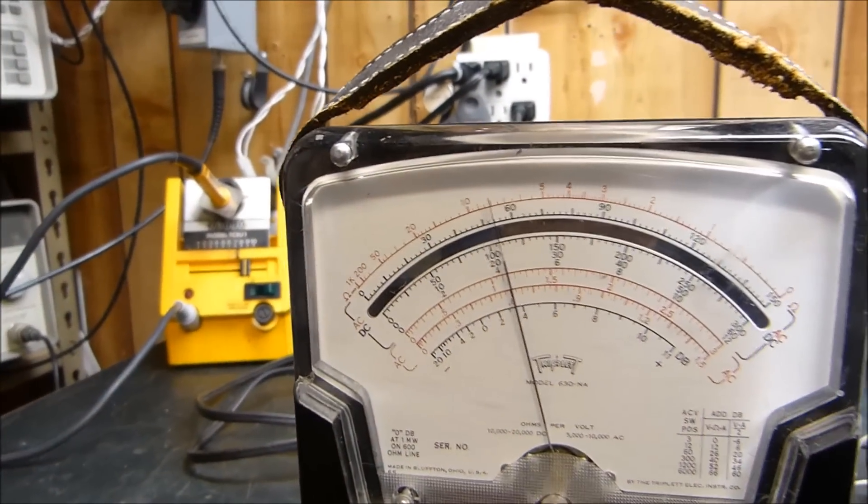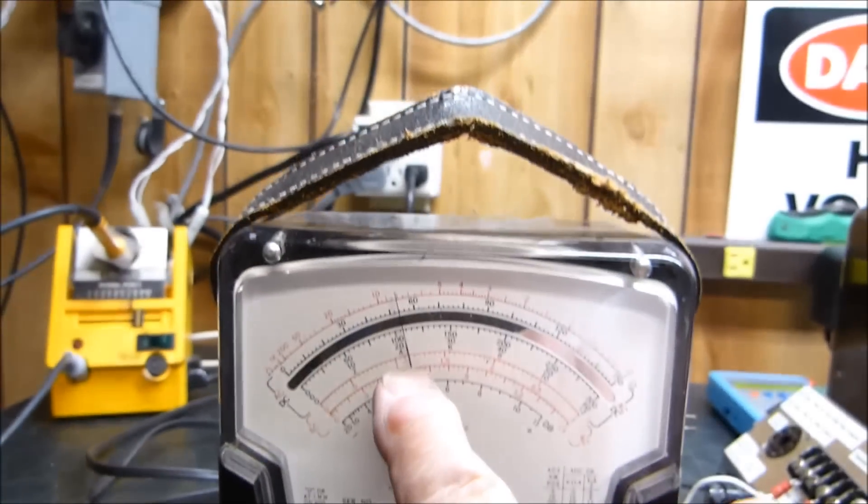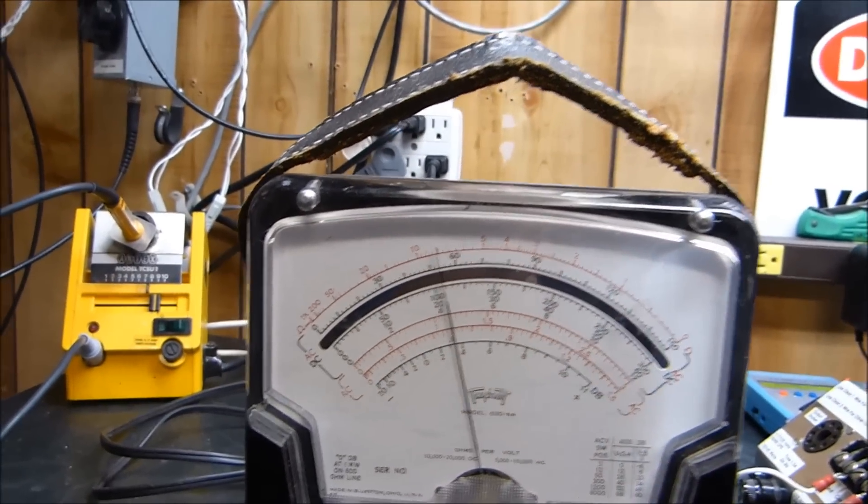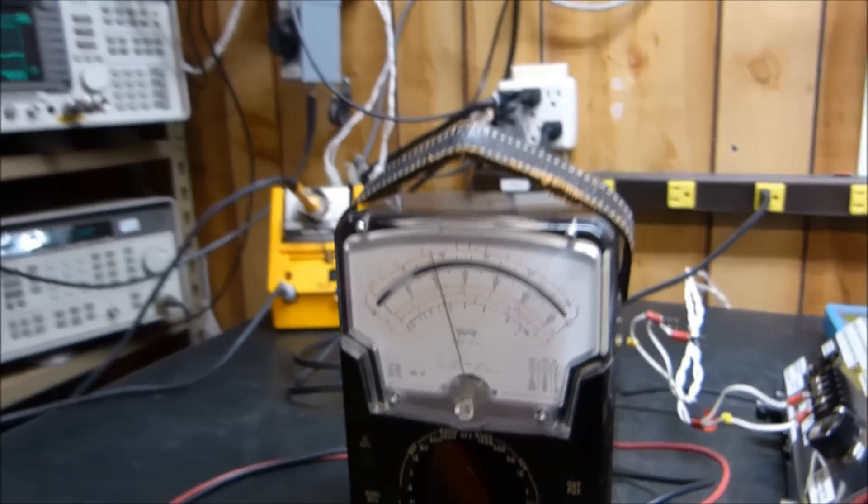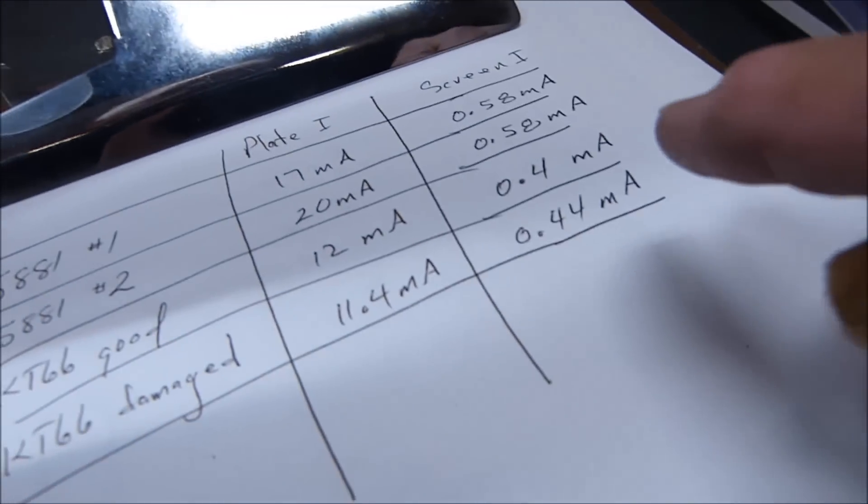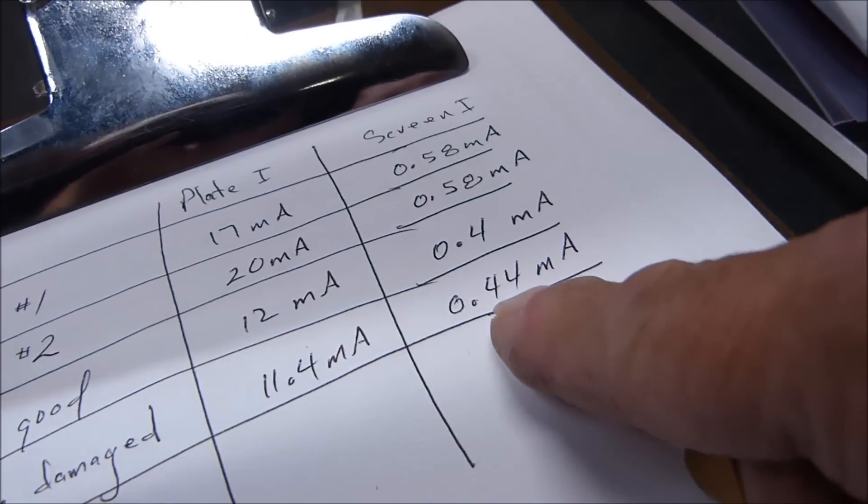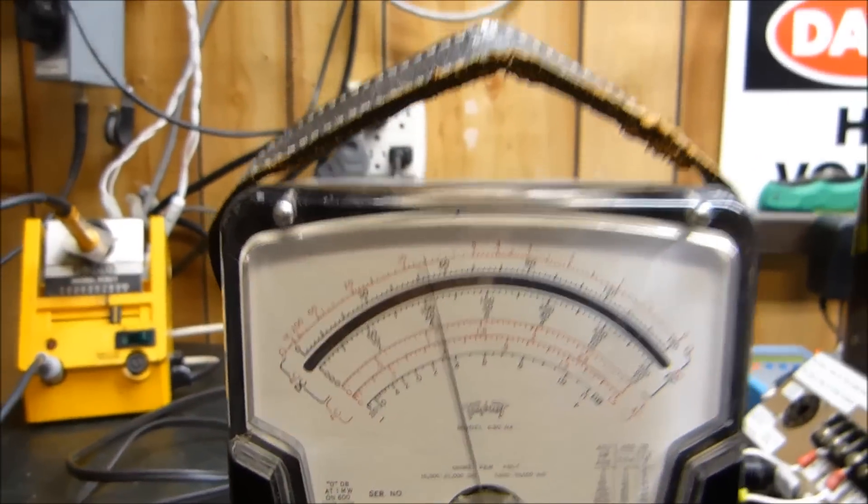Right now this one's measuring about, I'm on the 1.2 milliamp scale, so it's about 0.43. That's 430 microamps. It's actually this one, the 0.44 that measured about 0.43. Okay.